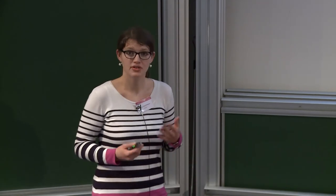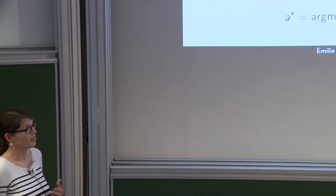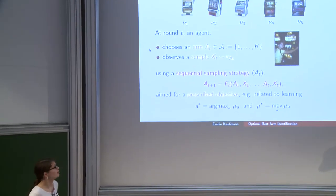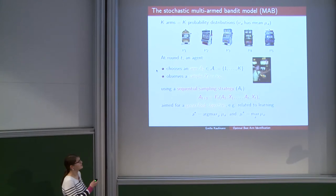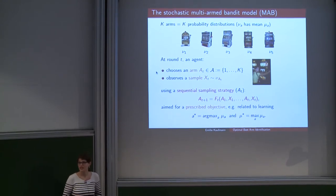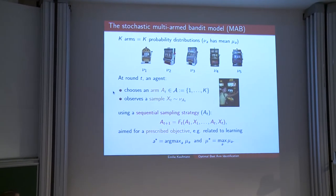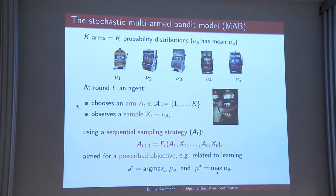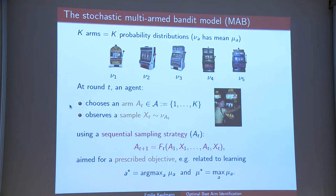First I will start by explaining what the multi-armed bandit model is. It is simply a collection of k probability distributions that we call arms, and then an agent sequentially interacts with these arms by choosing at time t an arm A_t that he wants to draw, then observing a sample from the associated probability distribution. His sampling strategy is sequential in the sense that the arm chosen at time t+1 must depend only on the past chosen arms A_1 up to A_t and the past observed samples x_1 up to x_t, and the way he samples the arms will be directed toward a goal related to learning.